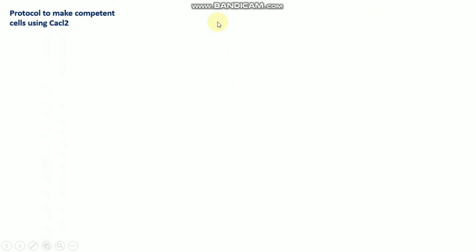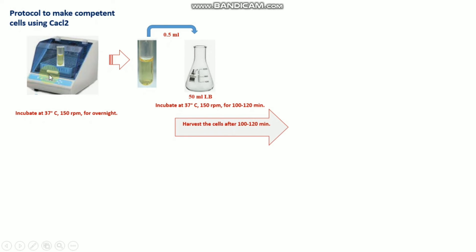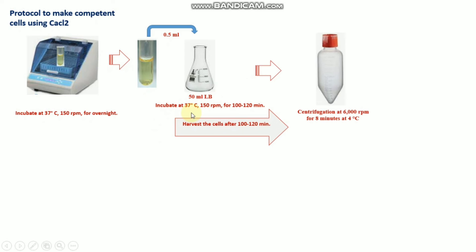Now let's look at the protocol for making competent cells using calcium chloride. First, incubate E. coli cells at 37°C, 150 rpm overnight for about 16 to 17 hours. Then transfer 0.5 ml of this culture to fresh 50 ml LB media in a 200 ml conical flask. Next, harvest the cells by incubating at 37°C, 150 rpm for 100 to 120 minutes. Then transfer the broth to a sterile centrifuge tube and centrifuge at 6000 rpm for 8 minutes at 4°C.